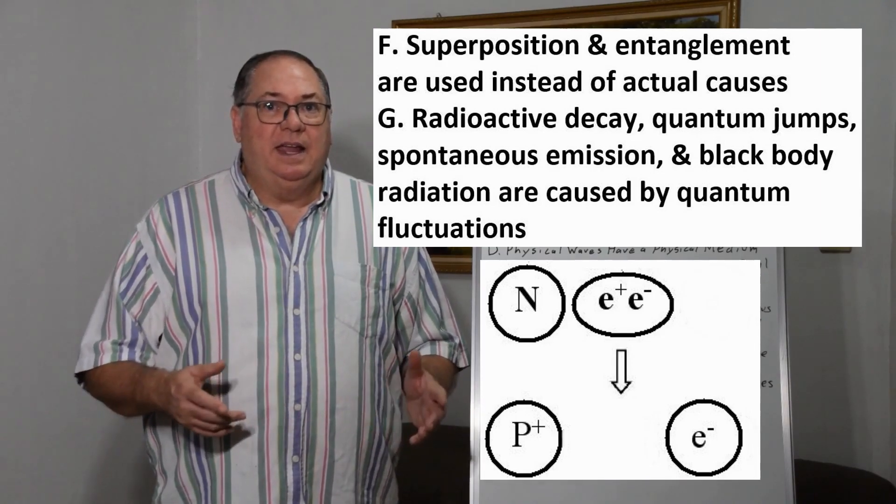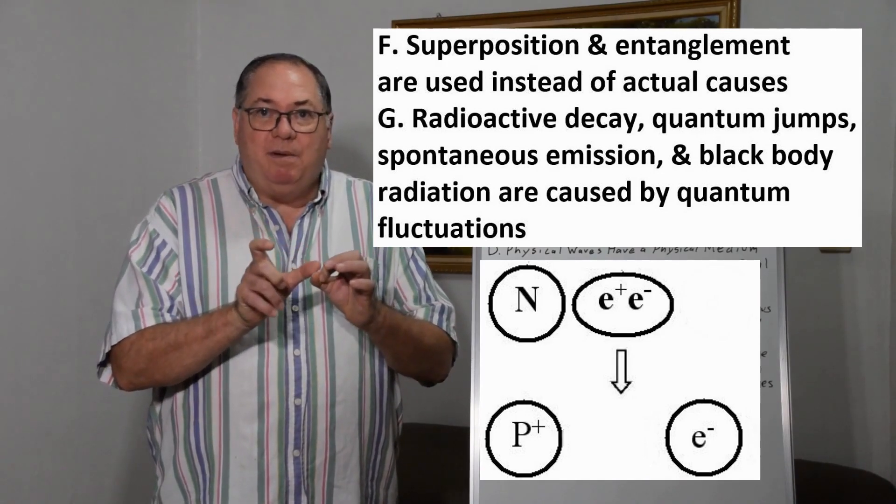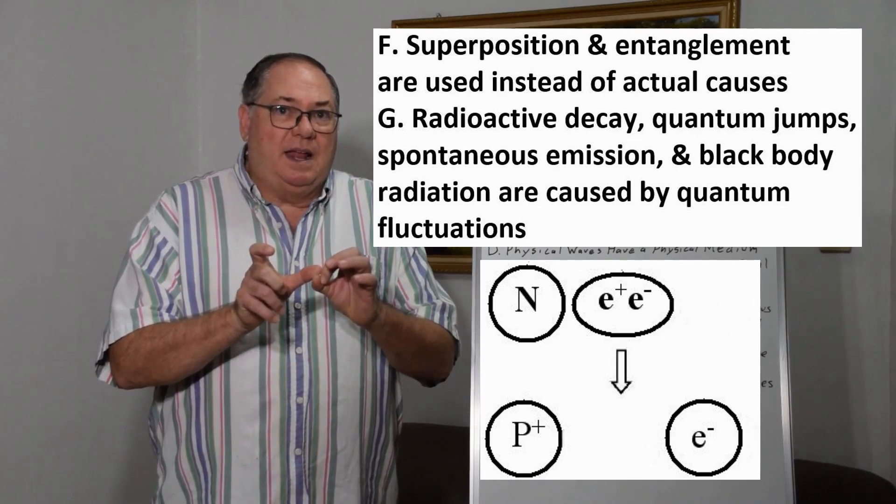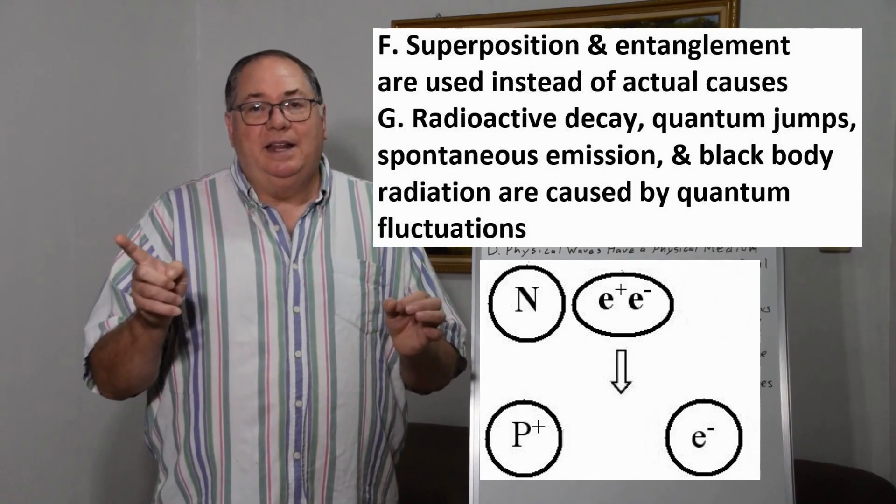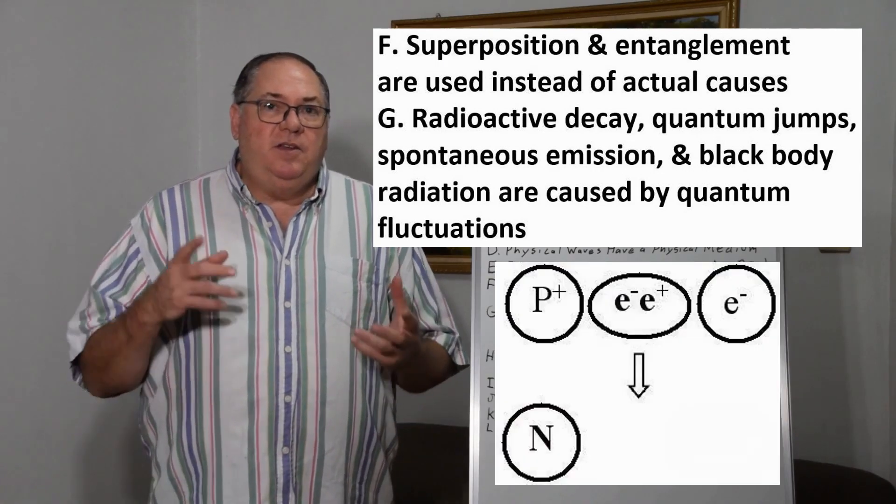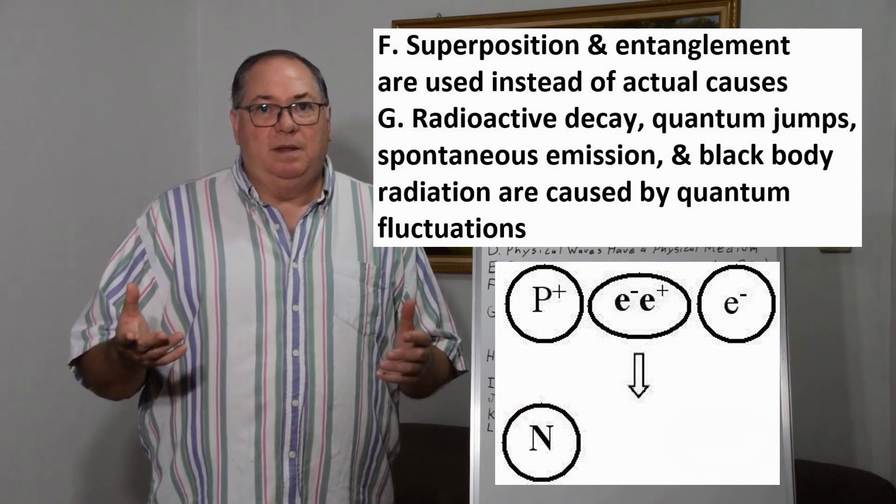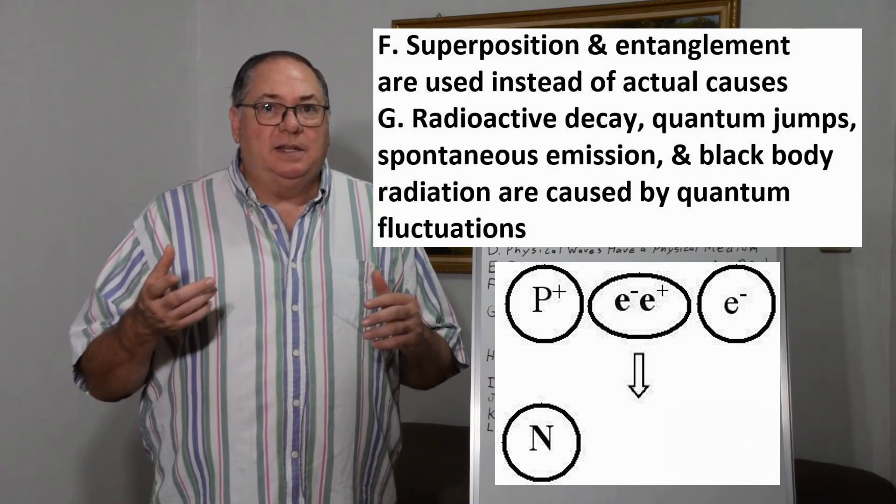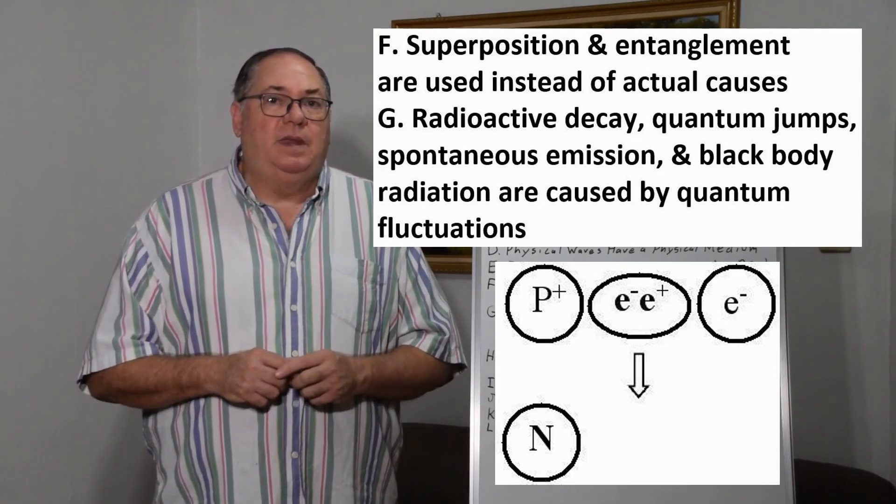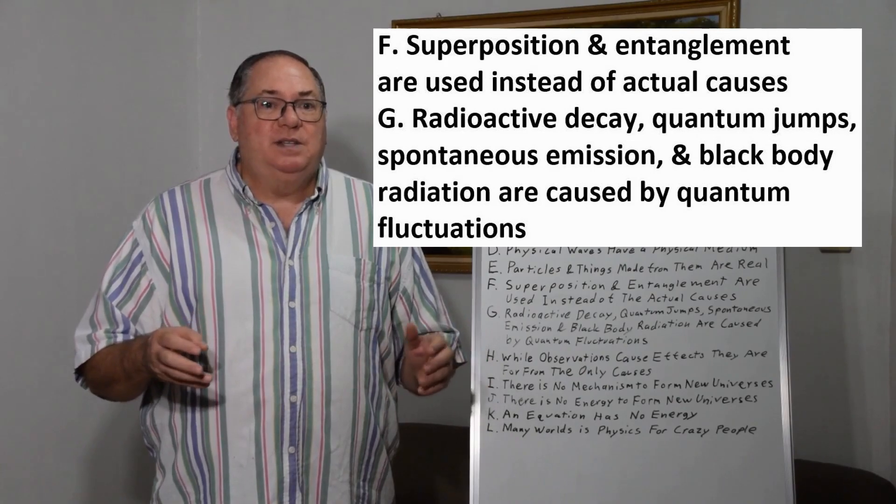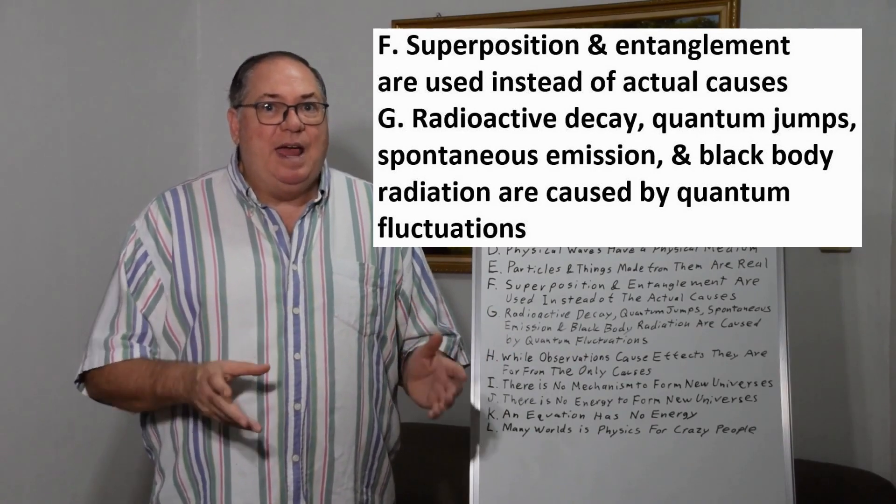What we see in one case in particular - radioactive decay - must have a trigger. It must have a cause, and that cause is an interaction with a quantum fluctuation. I've done several videos on that. Basically if you have a neutron and you have an electron and positron, the positron interacts with the neutron which annihilates the electron-like component of the neutron, turning it into a proton and then the electron becomes free.